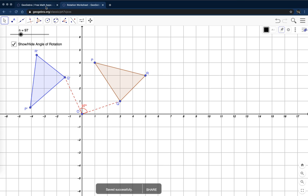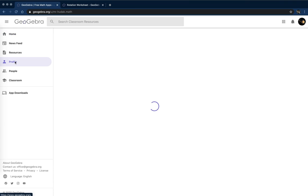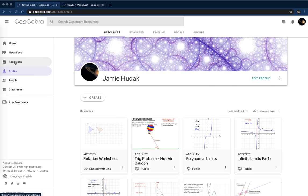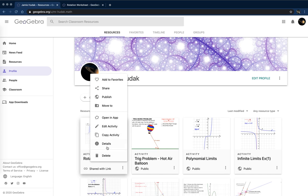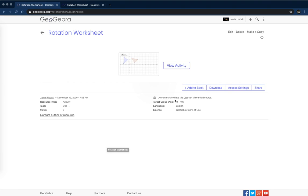And if I would like to get the embed code, I will go to my GeoGebra homepage. All the way to the left, click on profile. And from profile, see my rotation worksheet is here. Click on these little three buttons in the lower right-hand corner. You choose details, and then you choose the share option.